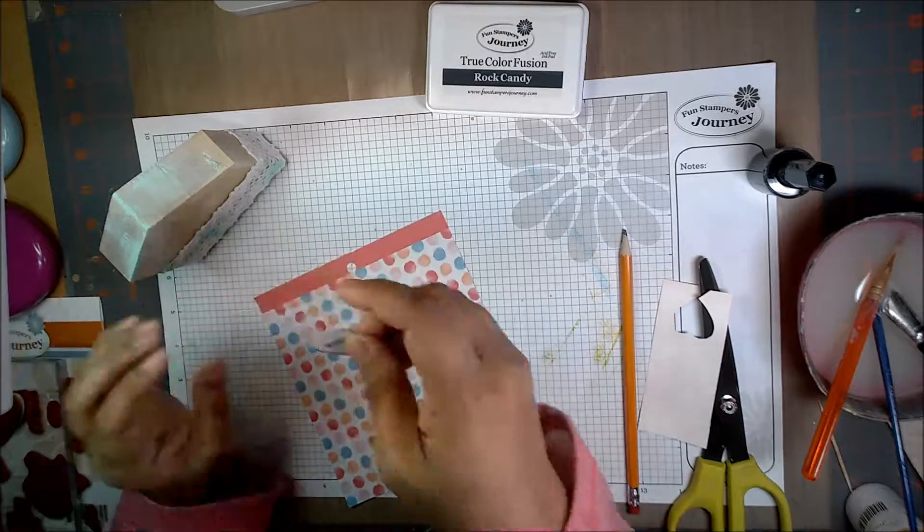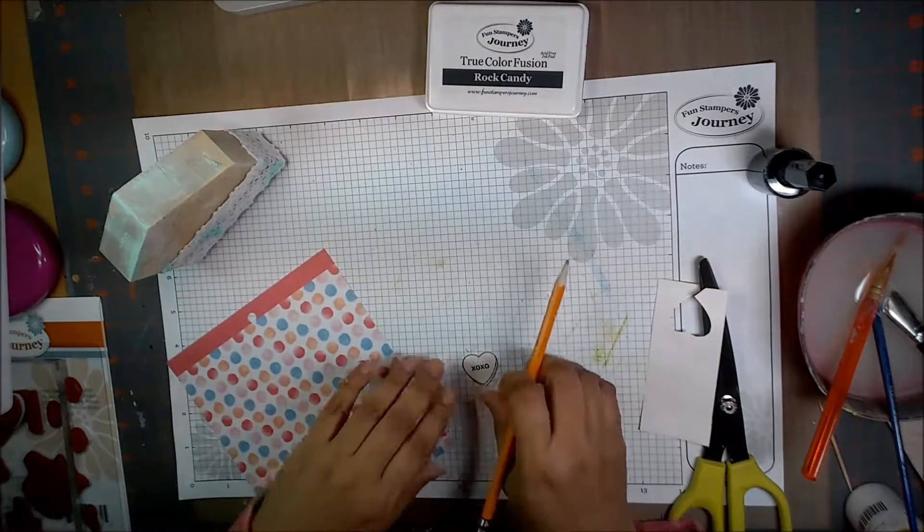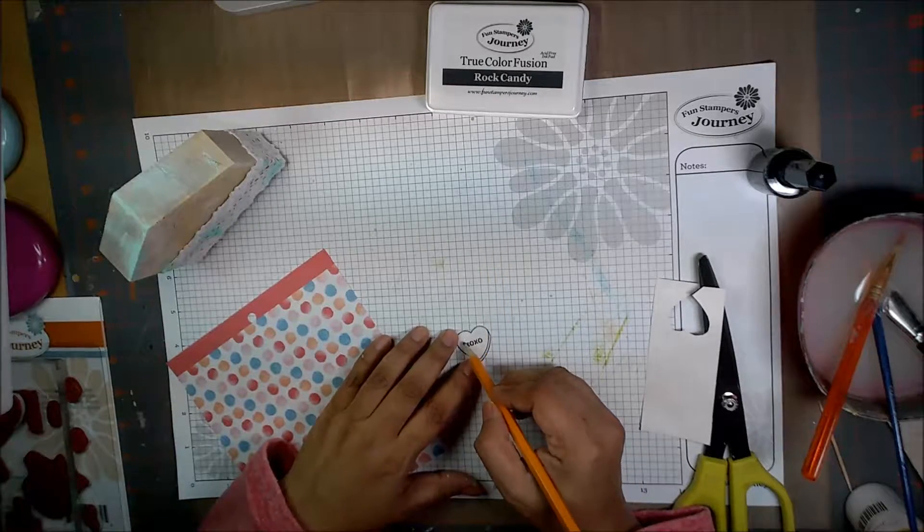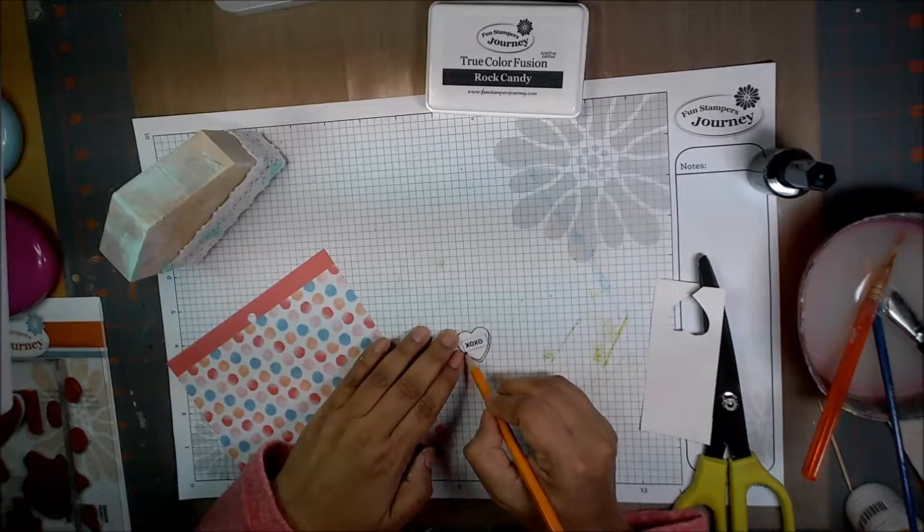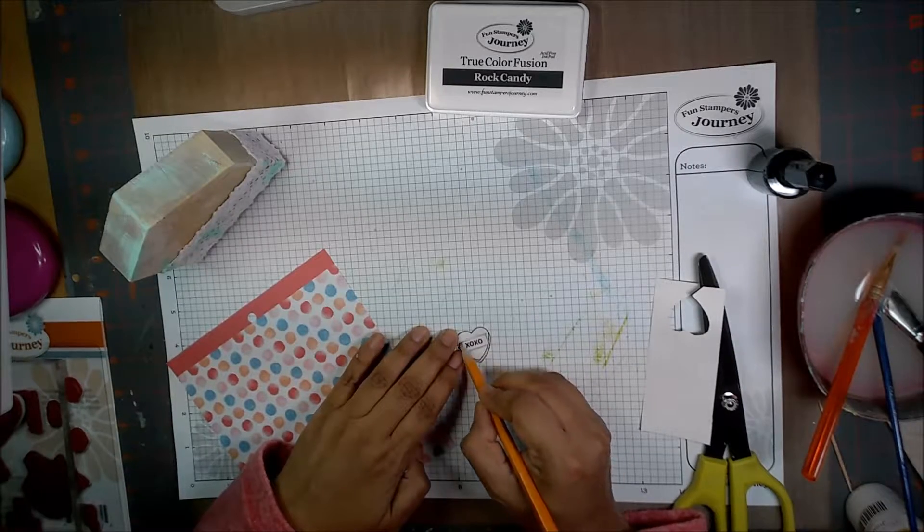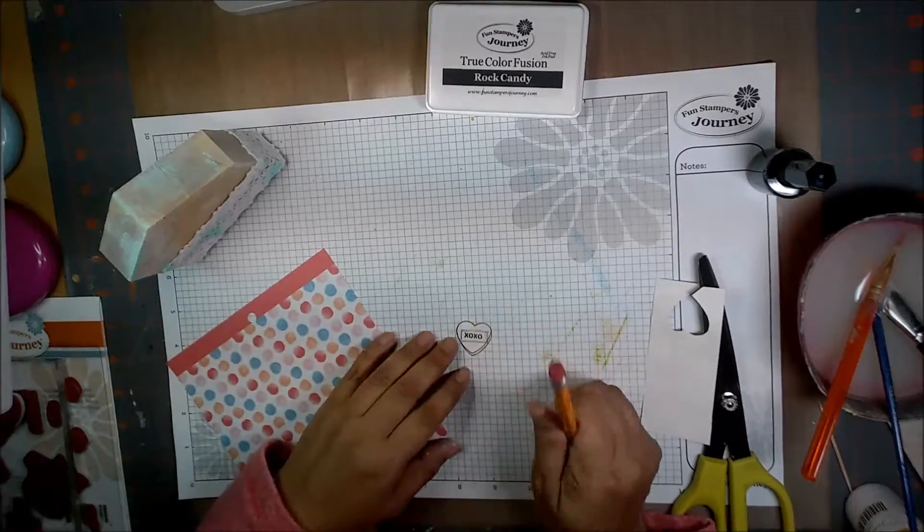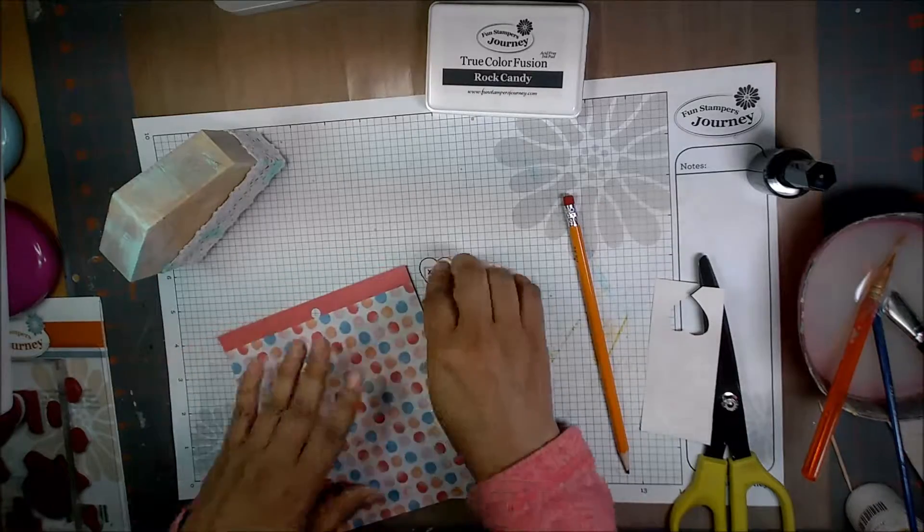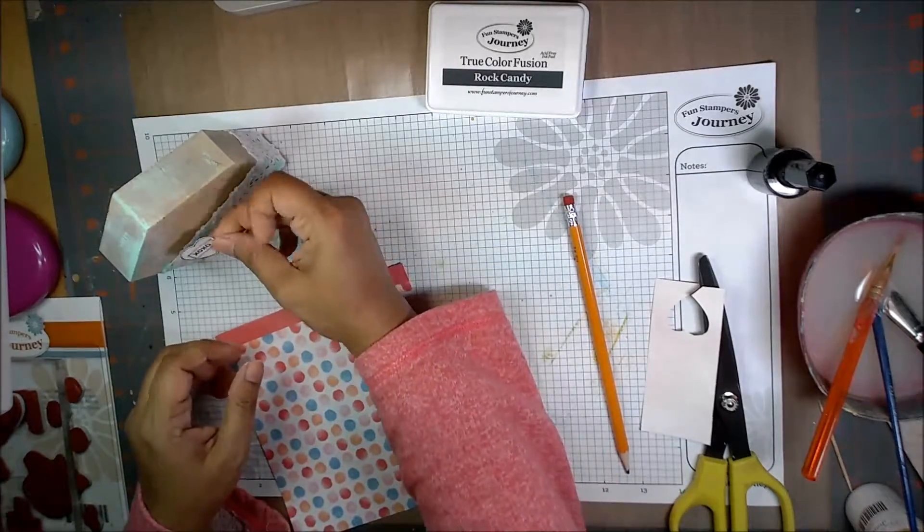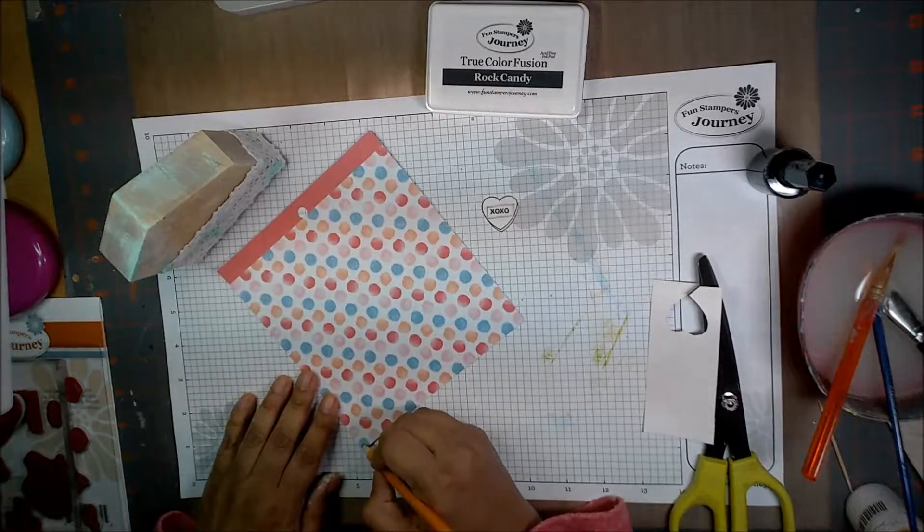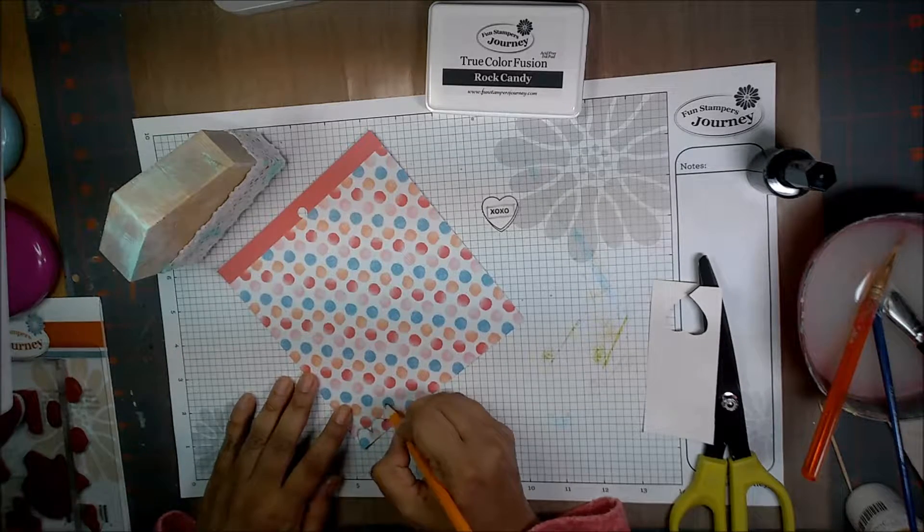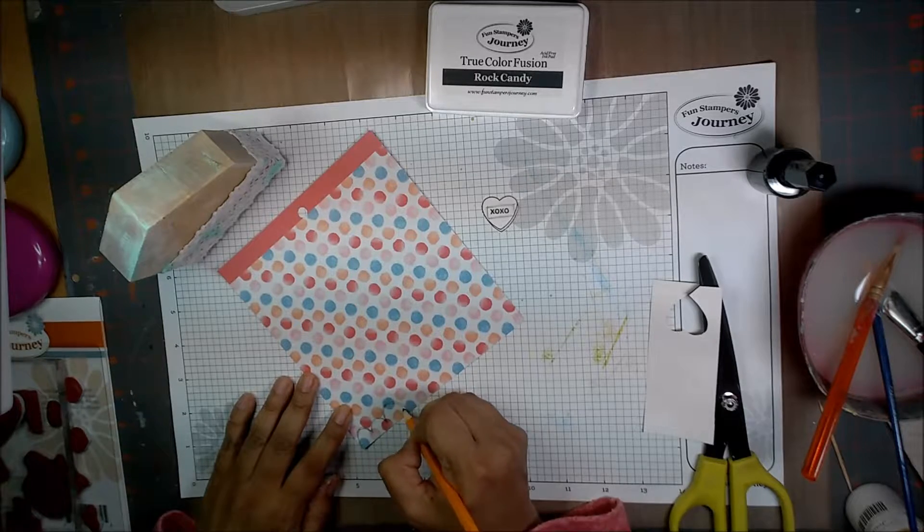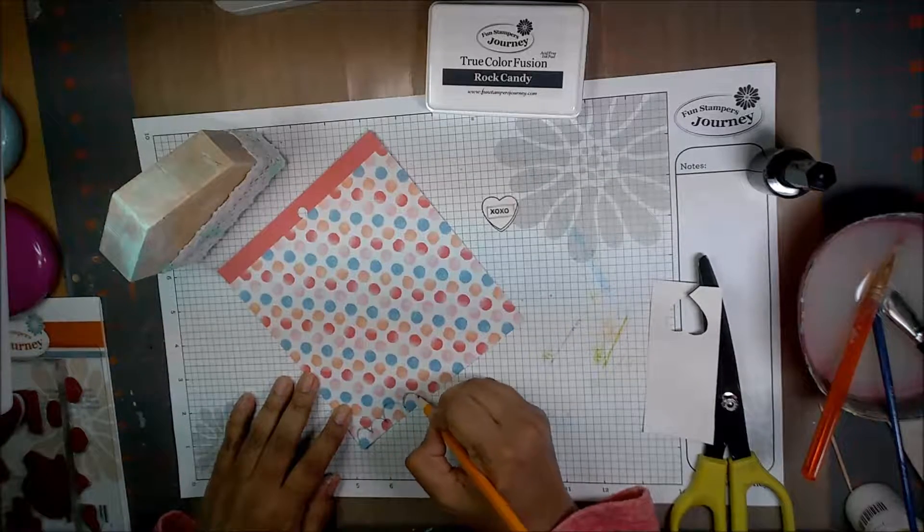That could go there. Before I add it to the house I'm just gonna take a pencil and make a box around the words and the word expression XOXO. Okay, I'm gonna just freehand some scallop edges. They don't have to be perfect, just the funkier the better I would say.